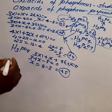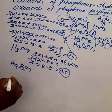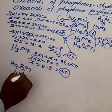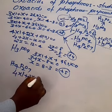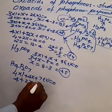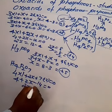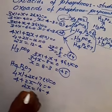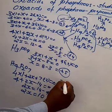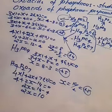For pyrophosphoric acid H4P2O7: 4(+1) + 2X + 7(-2) = 0, so 4 + 2X - 14 = 0, 2X = 10, X = +5. That is the oxidation state of pyrophosphoric acid.